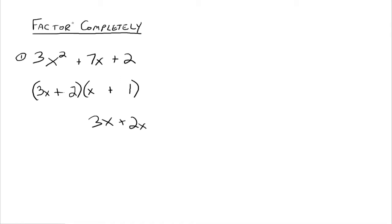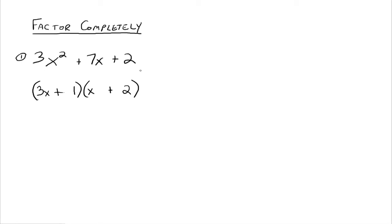So we need to try again. We did 2 and 1, so now we try 1 and 2 — switch the order around. We check it: 3x times 2 gives you 6x, and 1 times x gives you 1x. 6x plus 1x is indeed 7x. So 3x plus 1 times x plus 2 is how we factor this original trinomial.